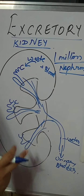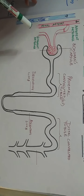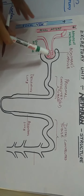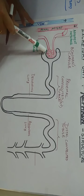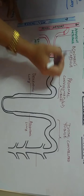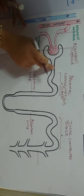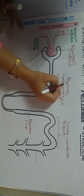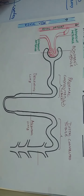Now I will explain the detailed structure of the nephron. Look carefully — this is the cup-shaped part of the nephron, which is called the Bowman's capsule, named after the scientist. This Bowman's capsule extends towards the tubular-like structure which is called the proximal convoluted tubule, or PCT for short.